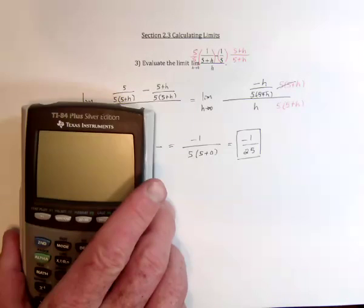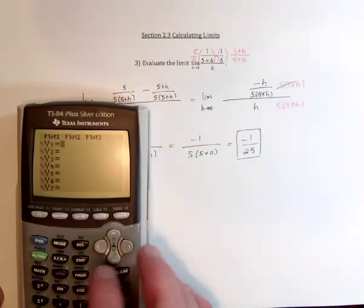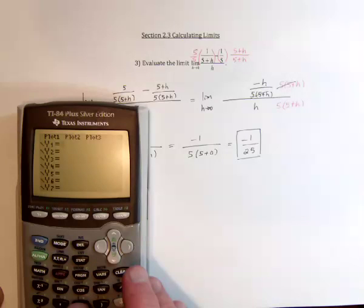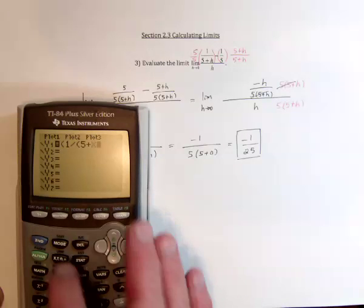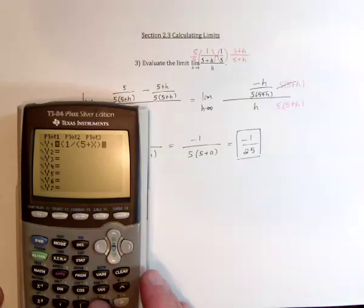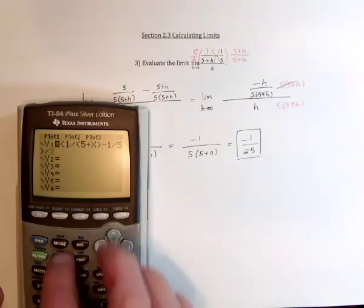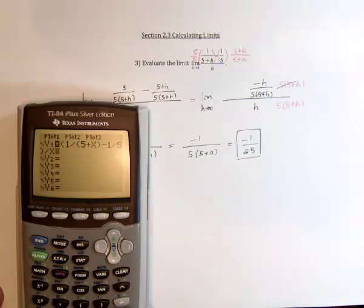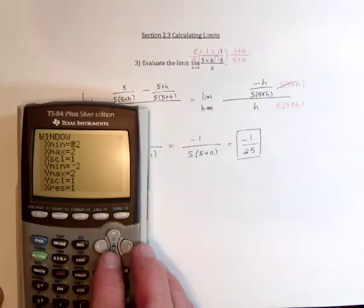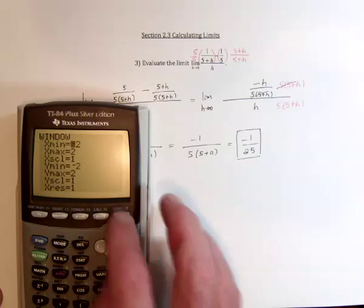And then I would like to take a look at the graph and see if that looks right. So you've got (1 divided by (5 plus x)) minus 1/5, and then close the parentheses for the numerator, and divide it by x. And that setup from negative 2 to 2 should cover it.